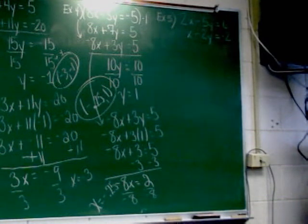All right. Last one. Example 5. 2x minus 5y equals 6. x minus 2y equals negative 2. Now, notice in this one, not only do I not have something opposite, I don't have the same numbers in front of anything.